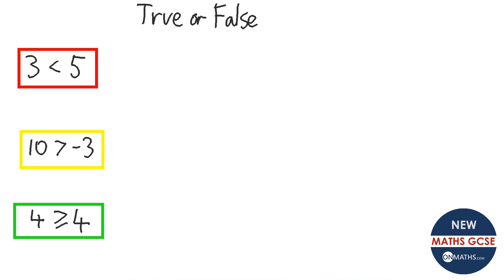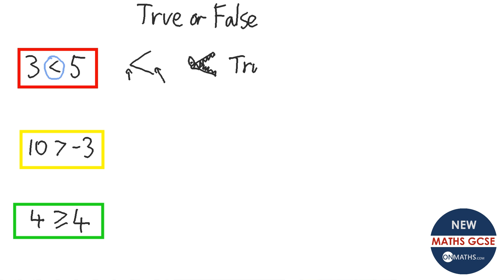Okay, so a simple true or false question to start off. The important thing to realise is what the inequality symbol means. Some teachers say the smaller side holds the smaller number and the bigger side holds the bigger number. Some like to call it a crocodile — the crocodile always eats the bigger number. So this reads 3 is smaller than 5, and therefore that is true.